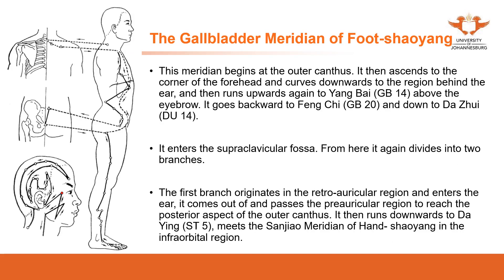The gallbladder meridian is quite long — it is a foot meridian of Shao Yang. This meridian begins at the outer canthus, then ascends through the corner of the forehead and curves downward to the region behind the ear. It turns toward GB14 above the eyebrow and goes back to GB20, then down to GB14. This meridian's pathway is complicated.